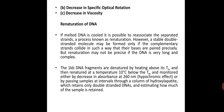1 kb DNA fragments are denatured by heating above their Tm and then re-natured at a temperature 10 degrees centigrade below the Tm. For example, if 80 degrees is the Tm, then at 70 degrees the DNA will be re-naturing. This can be monitored by a change in absorbance. If the absorbance has decreased, it means renaturation has taken place. This terminology is called the hypochromic effect — a decrease in absorbance of light when renaturation takes place.